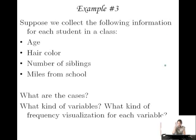Let's move on. Example number three. Suppose we collect the following information for each student in a class: age, hair color, number of siblings, miles from school. So what are the cases in this data set, and what kind of variables are here? So is it categorical or continuous? And what kind of frequency visualization would we create for each variable? Let's start with the first question. What are the cases? Well, what's the thing that sort of unites all of these four variables together? Well, that's going to be each student. So each student is a case.